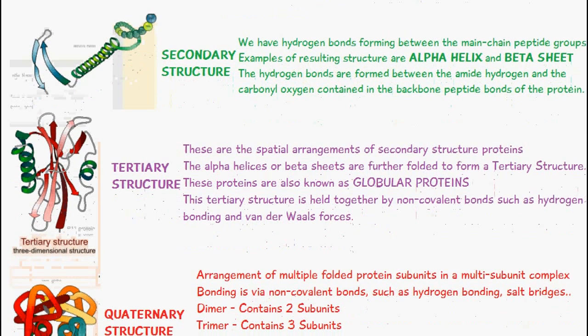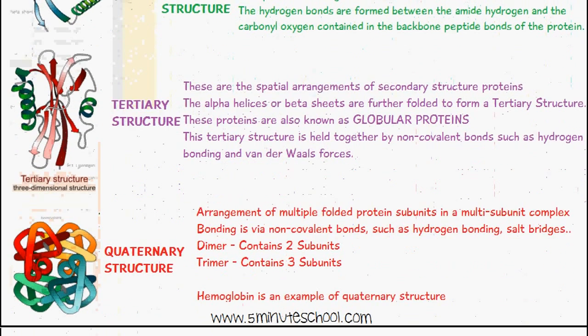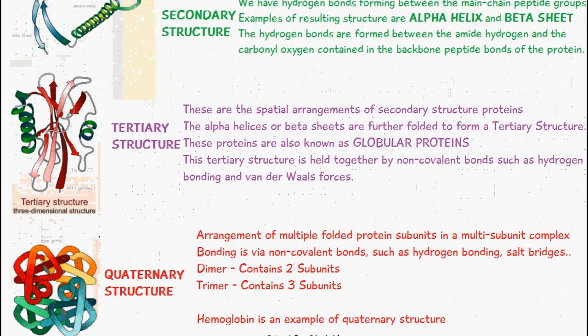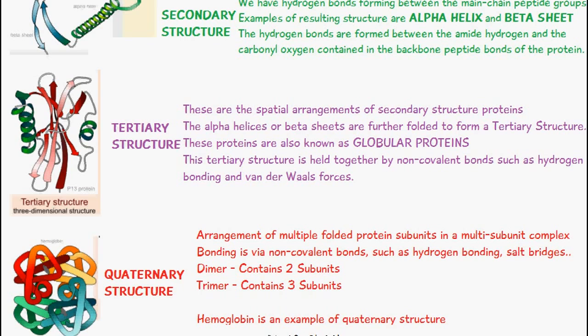Moving on, we have the tertiary structure of proteins. These are certain spatial arrangements of these secondary structure proteins. The alpha helices or the beta sheets are going to get folded even more to form a tertiary structure. This diagram here represents the tertiary structure.